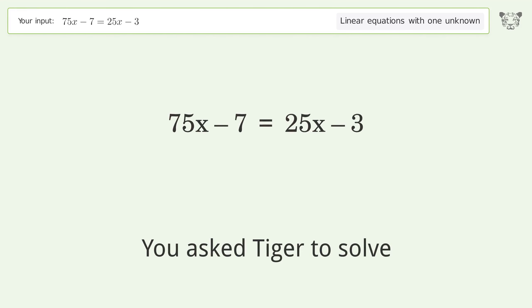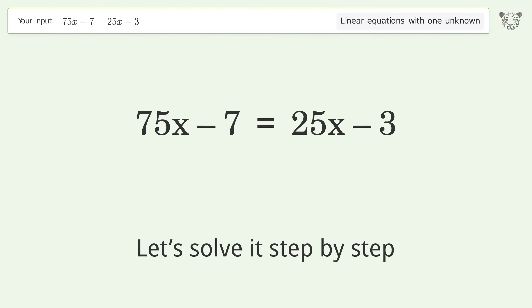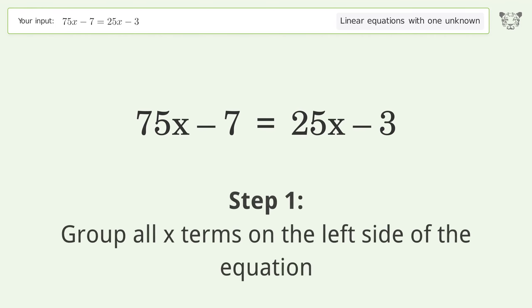You asked Tiger to solve this. This deals with linear equations with one unknown. The final result is x equals 2 over 25. Let's solve it step by step. Group all x terms on the left side of the equation.